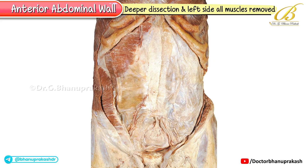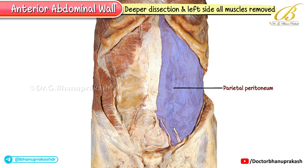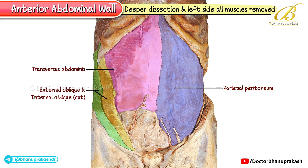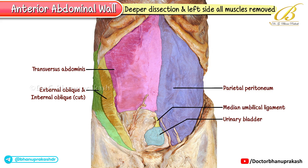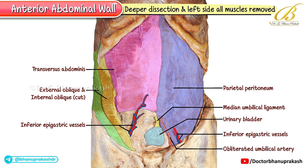In this deeper dissection of the anterior abdominal wall, on the left side all of the abdominal wall muscles have been removed, exposing the parietal peritoneum beneath. On the right side, however, the cut ends of the external oblique and internal oblique muscles are visible, while the transversus abdominis remains intact. Moving to the lower abdominal region, the urinary bladder is illustrated along with the median umbilical ligament, which represents the remnant of the fetal urachus. On the right side, the inferior epigastric vessels are seen lying just superficial to the transversus abdominis. On the left side, in addition to the cut ends of the inferior epigastric vessels, you can also identify the obliterated umbilical artery.